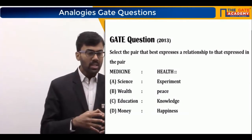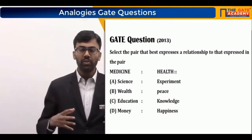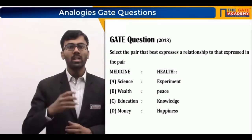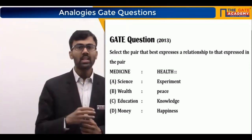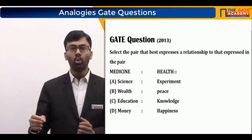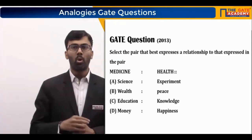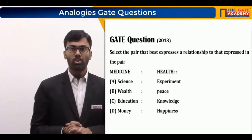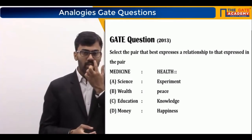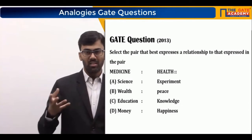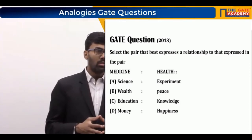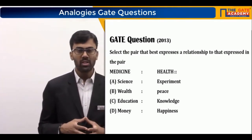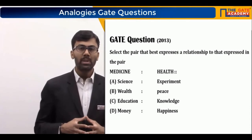Option A is 'science : experiment.' Science is a very broad area and experiments are done within science, but that does not mean science is used to improve experiments. Experiments are part of science, so the relationship is not similar to the original pair. Option B is 'wealth : peace.' Wealth can sometimes buy peace, but can also create difficulties, so there is no clear logical relationship between wealth and peace.